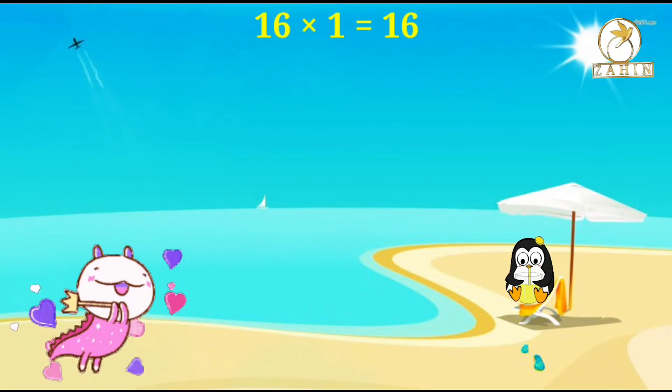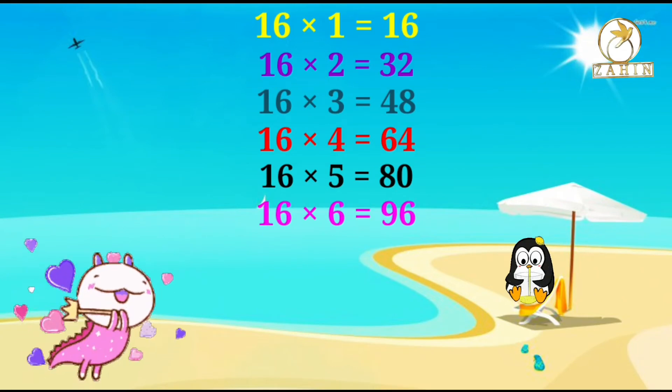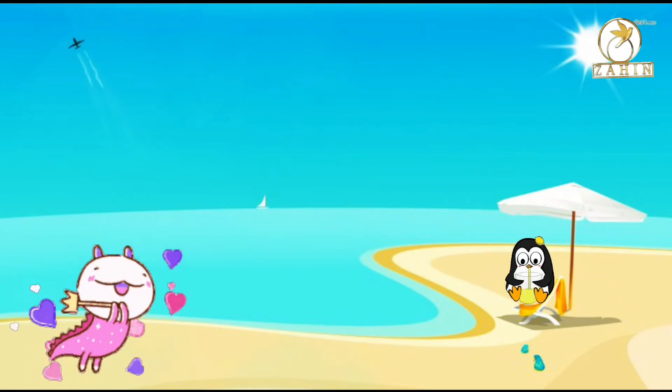16 times 1 equals 16, 16 times 2 equals 32, 16 times 3 equals 48, 16 times 4 equals 64, 16 times 5 equals 80, 16 times 6 equals 96, 16 times 7 equals 112, 16 times 8 equals 128, 16 times 9 equals 144, 16 times 10 equals 160. 17 times 1 equals 17.